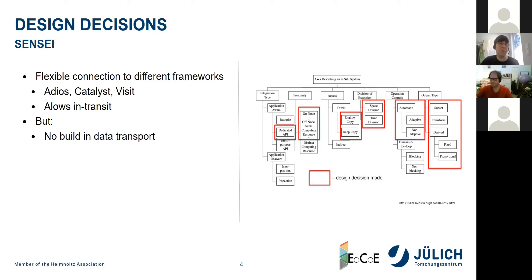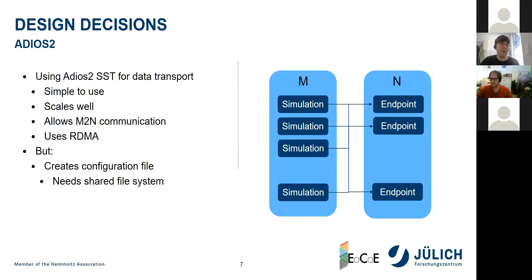One thing we are missing with SENSEI is built-in data transport. That's where we use Adios 2 as a data transport mechanism. Specifically, we use SST — Sustainable Staging Transport — because it scales really well and allows M-to-N communication. This means we don't have to have the same number of nodes in our simulation as in our endpoint. For example, you could run a simulation with 100 nodes but use only 10 for your visualization, depending on your memory and CPU needs.